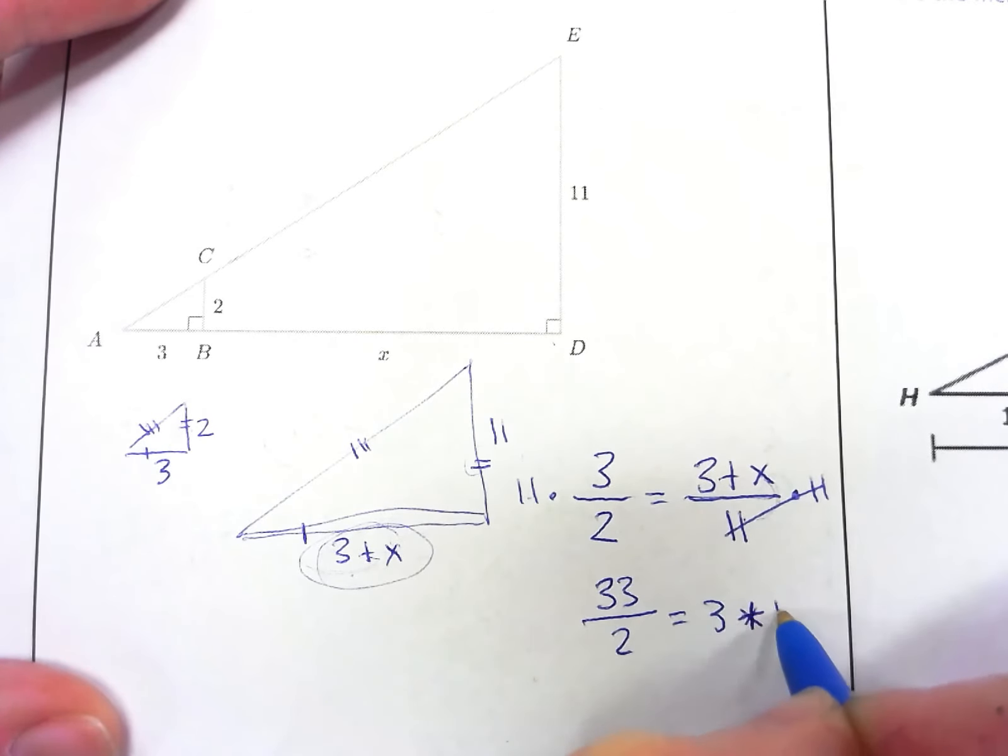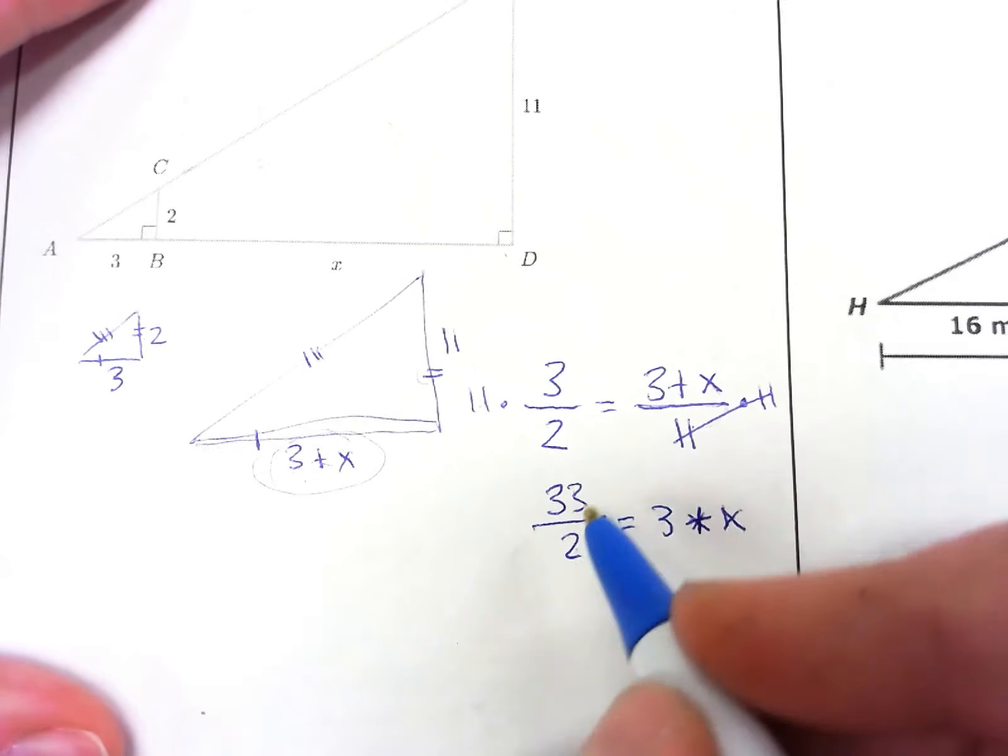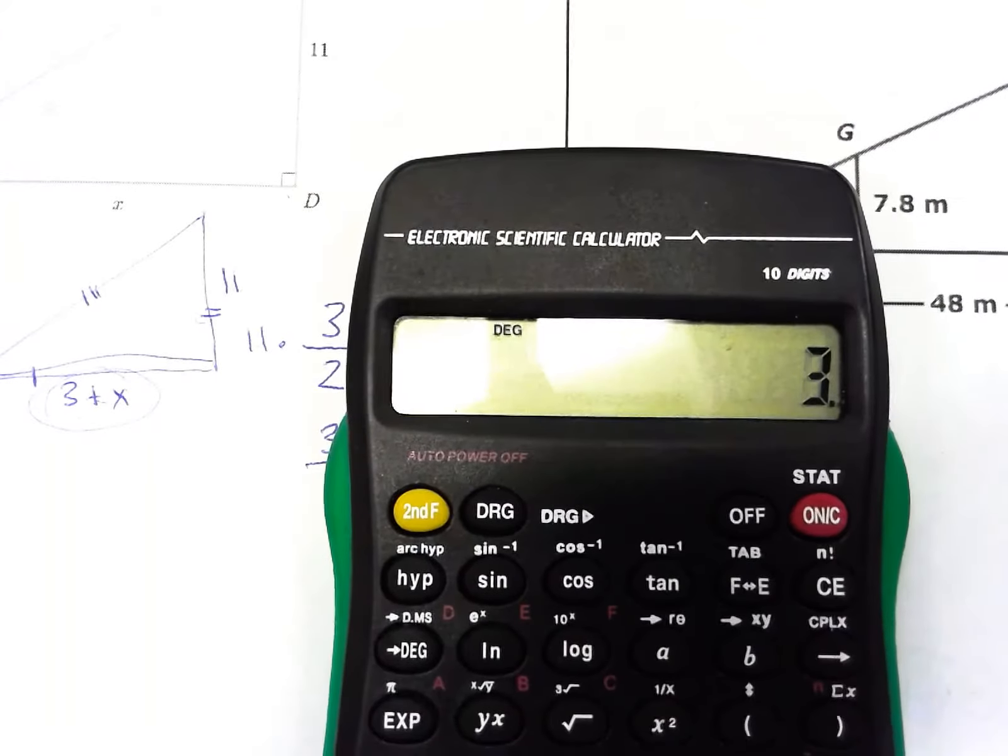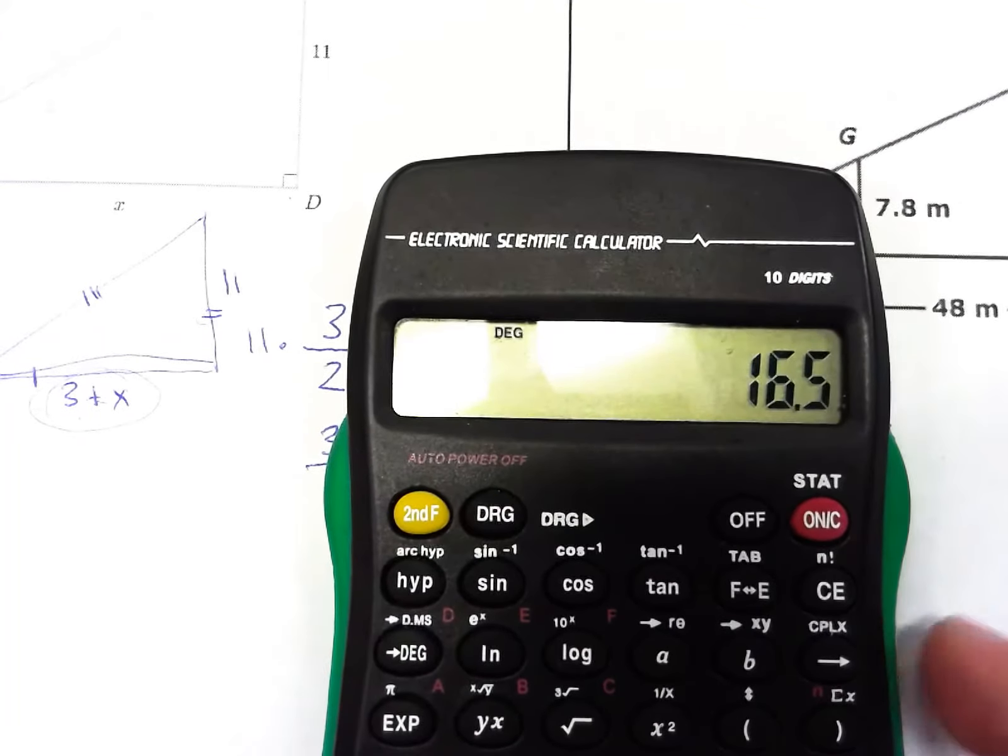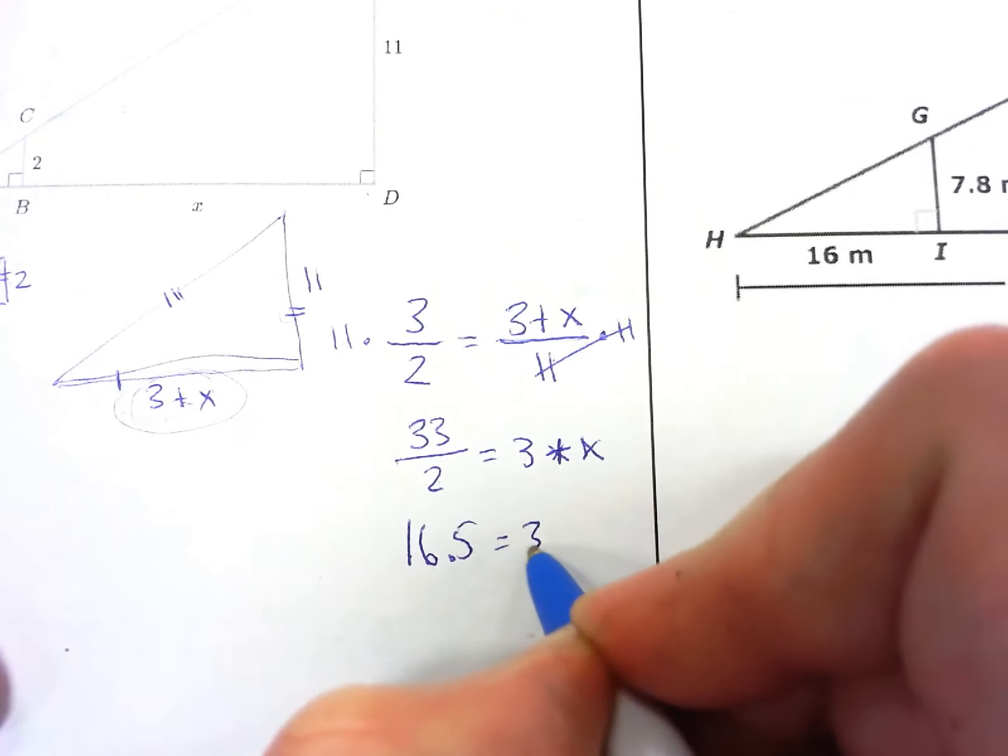3 plus x. And then 33 divided by 2, let's try that in the calculator. 33 divided by 2 is 16.5, equals 3 plus x.